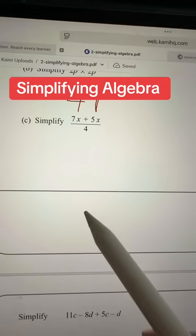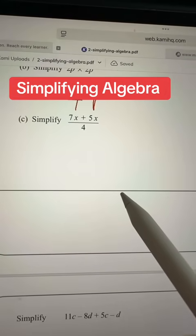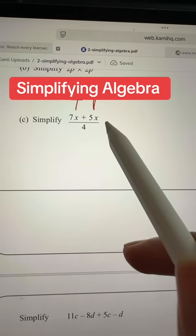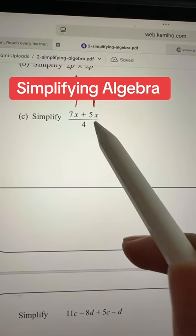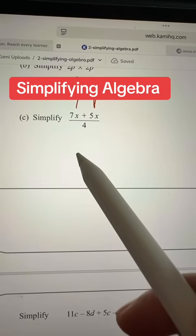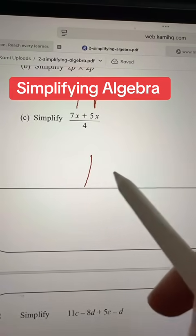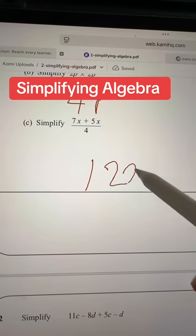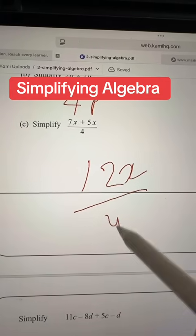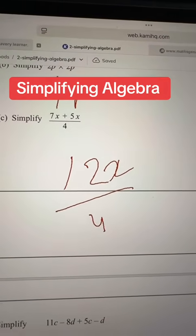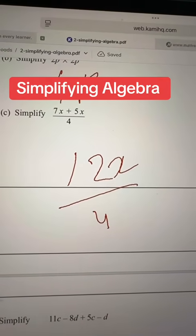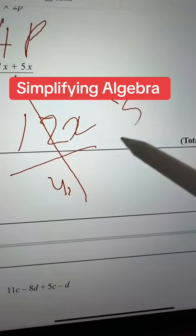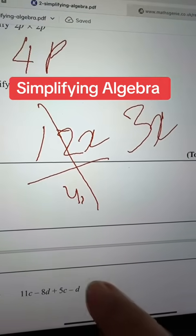Another one now. You have 4x plus 5x divided by 4. First, add them up. 4x plus 5x is 12x divided by 4. Try dividing now. 12 divided by 4. That will give me 3, so my answer is 3x.